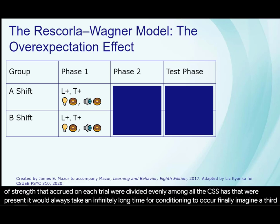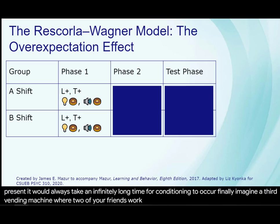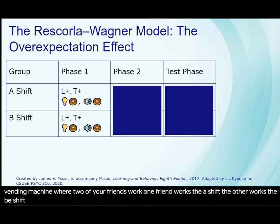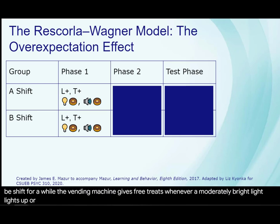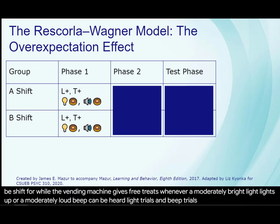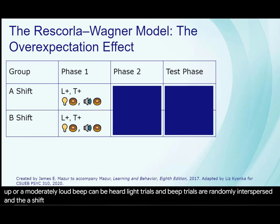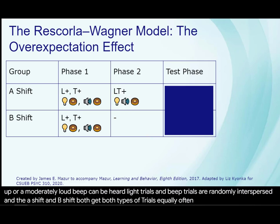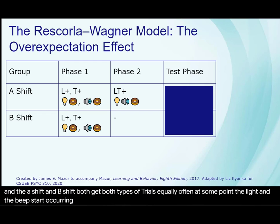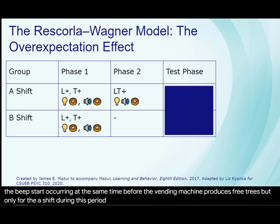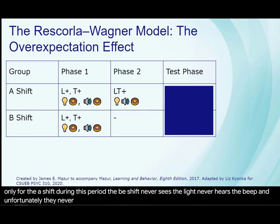Finally, imagine a third vending machine where two of your friends work. One friend works the A shift, the other works the B shift. For a while, the vending machine gives free treats whenever a moderately bright light lights up or a moderately loud beep can be heard. Light trials and beep trials are randomly interspersed, and the A shift and B shift both get both types of trials equally often. At some point, the light and the beep start occurring at the same time before the vending machine produces free treats, but only for the A shift. During this period, the B shift never sees the light, never hears the beep, and unfortunately they never get free treats either.